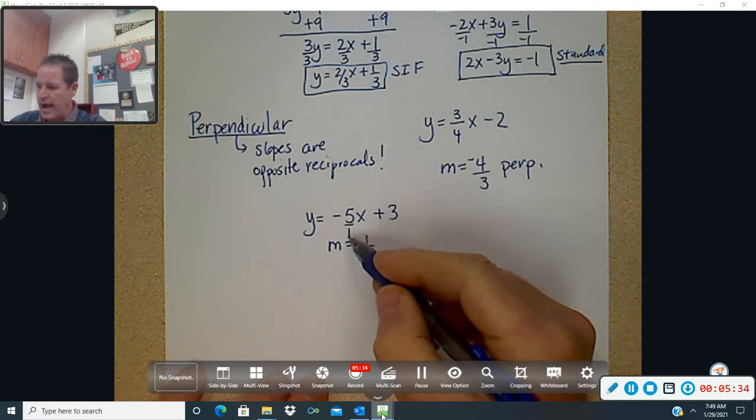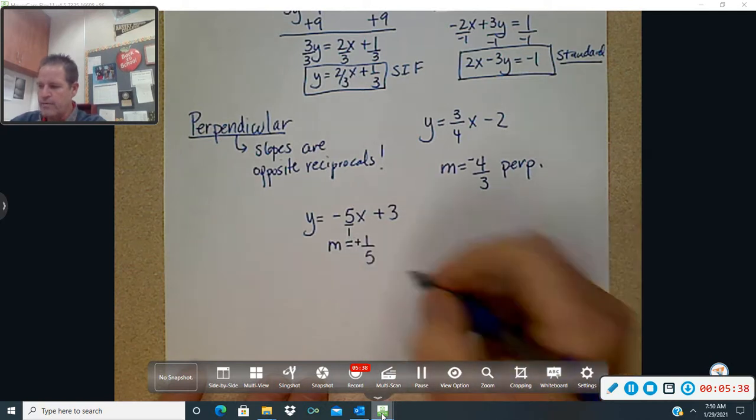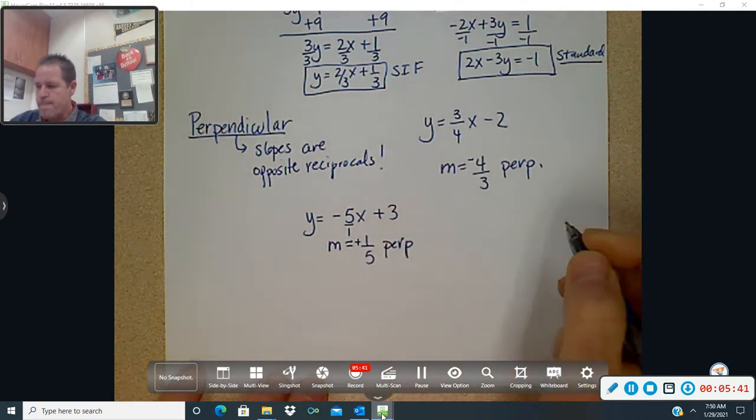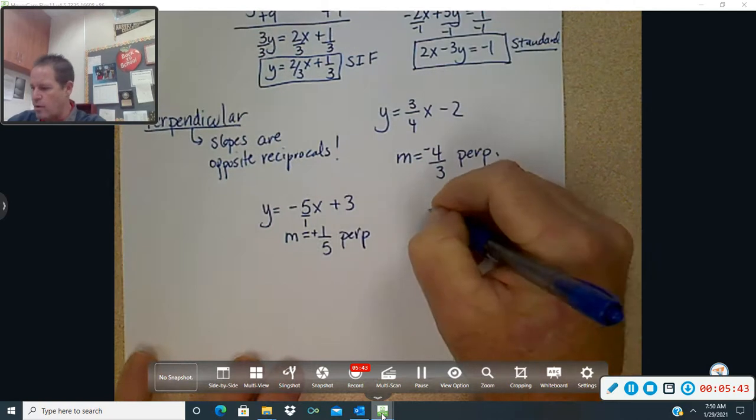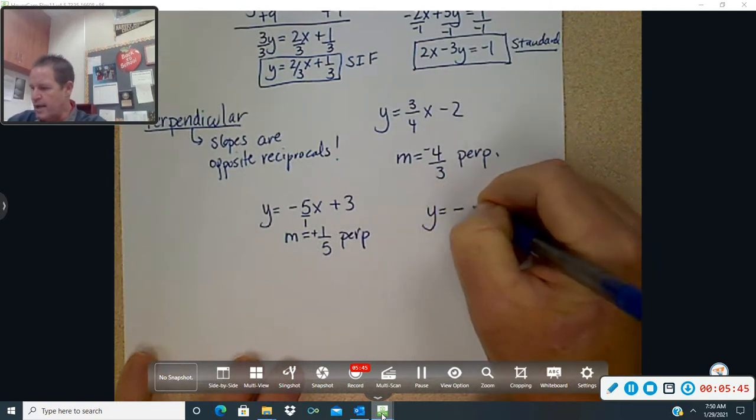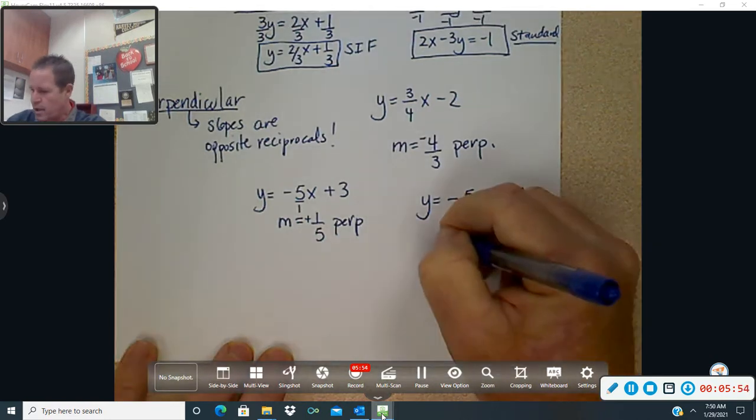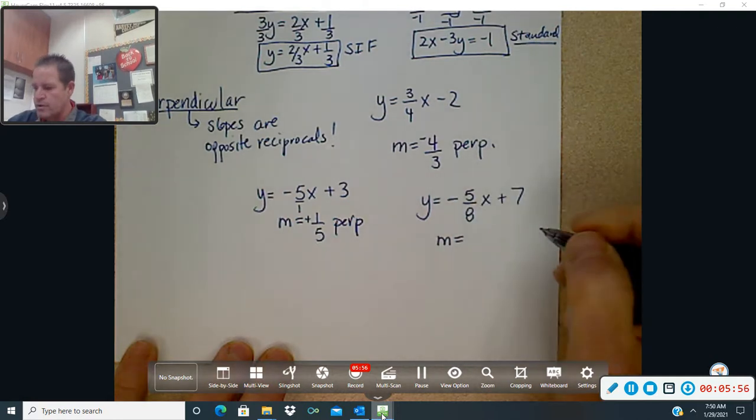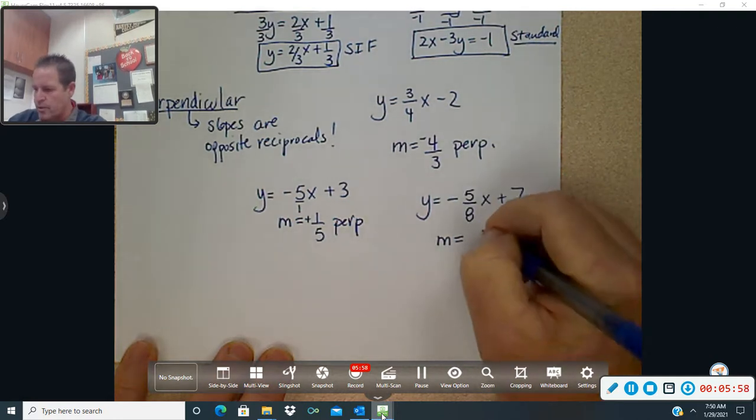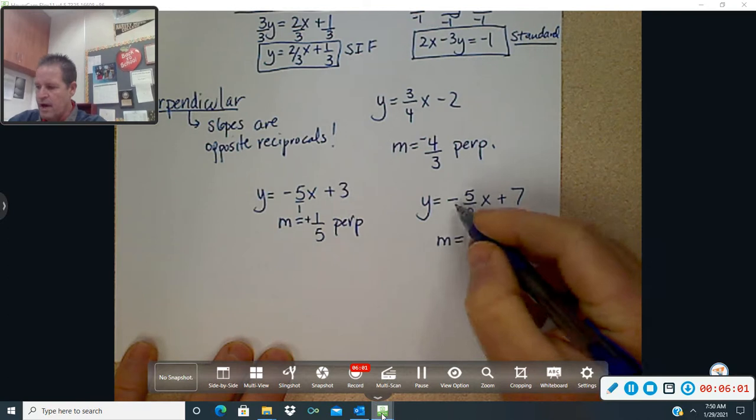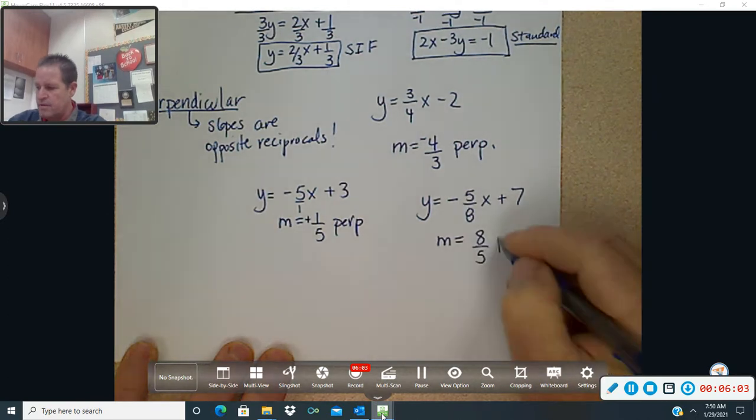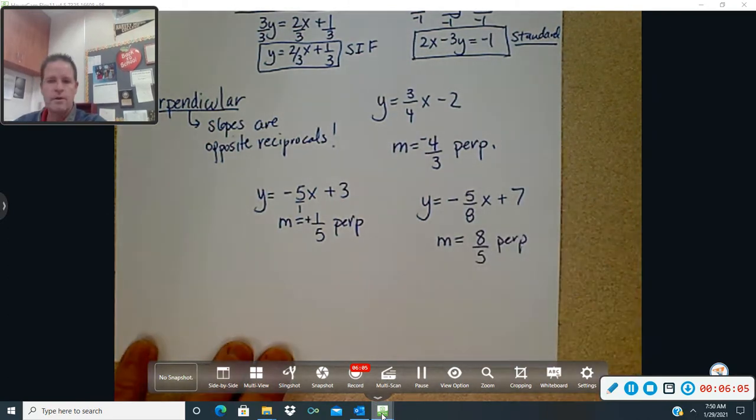So again, if you have just a whole number, put it over 1, flip it over, and now you've got your perpendicular slope. Okay, they might give you y equals negative 5, 8x plus 7. So what would be your perpendicular slope? It would be slope equals the opposite reciprocals. The reciprocal is 8 over 5. The opposite of a negative is positive. And that would be the perpendicular slope.